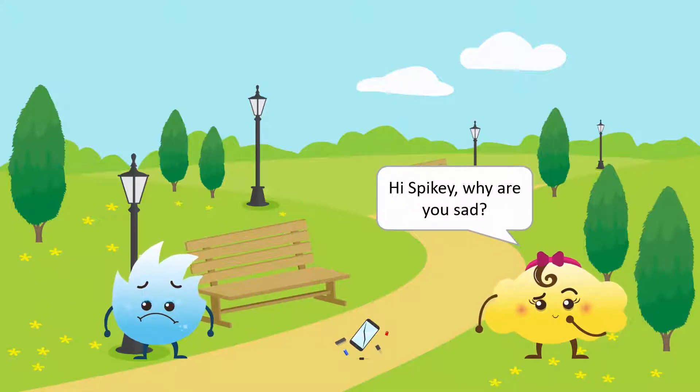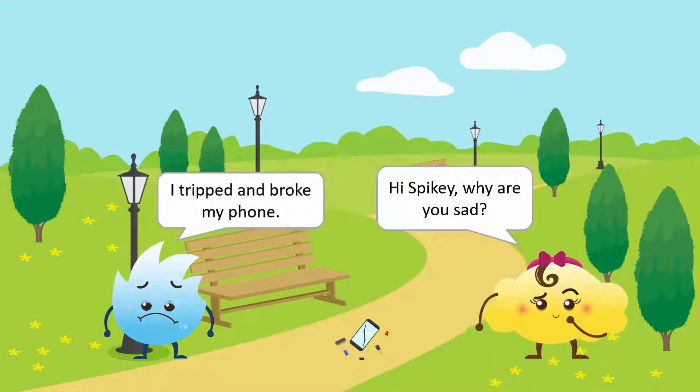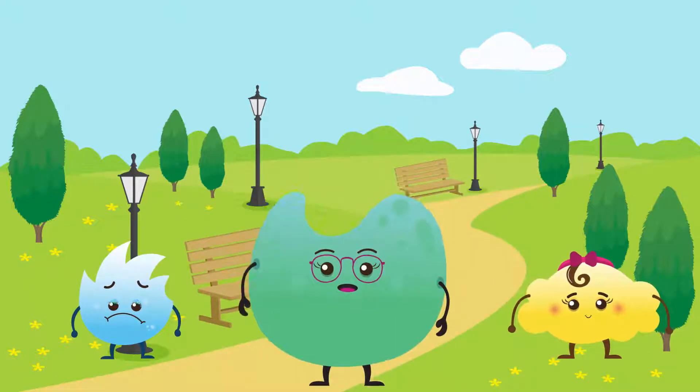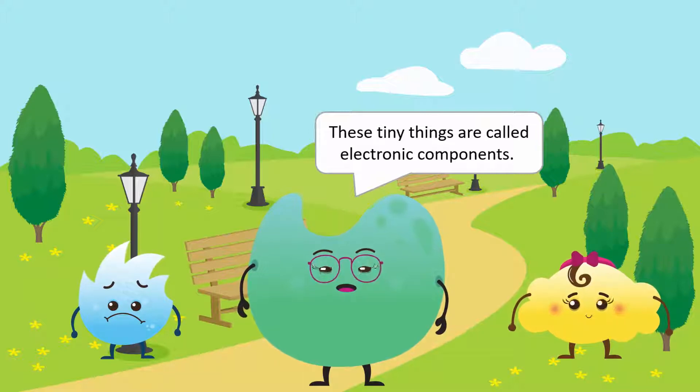Hi, Spikey. Why are you sad? I tripped and broke my phone. Look at all these tiny things that have come out of it. Bubbles. Spikey's phone is an electronic device, and it is made up of many different electronic components.